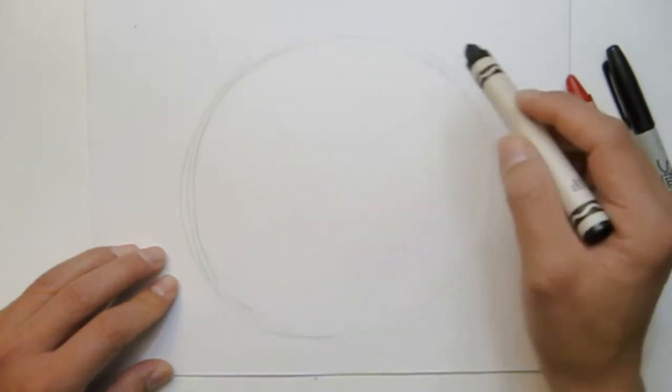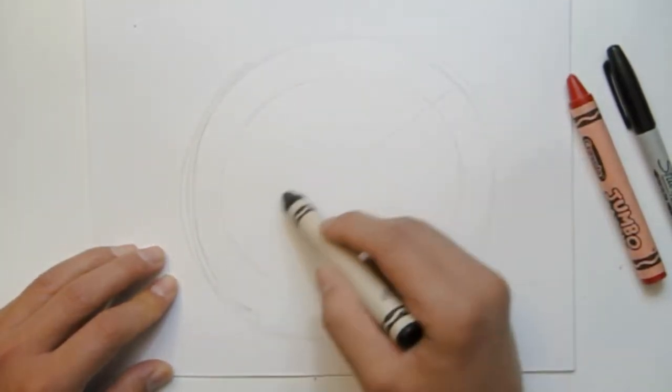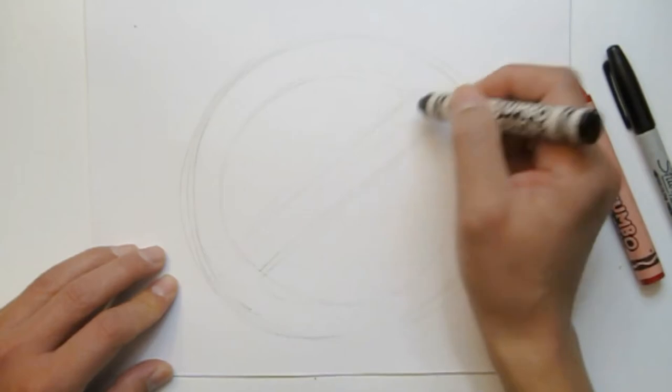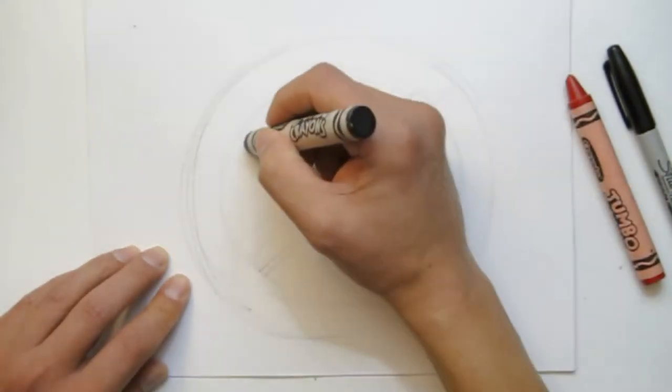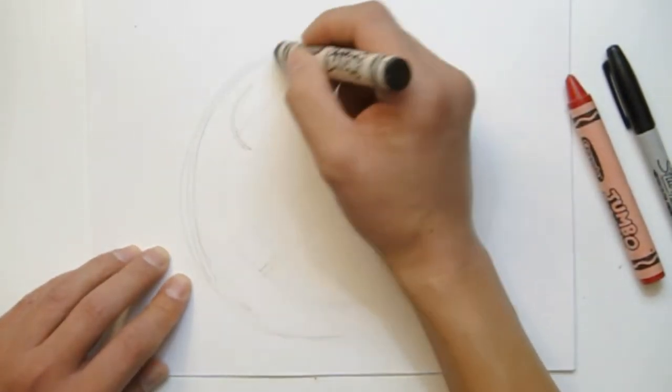So first, let's draw in the big circle. Roughly lay it in, put a diagonal line through the middle, and draw an inner circle. Then make an offset line.